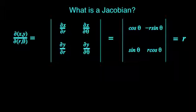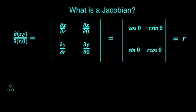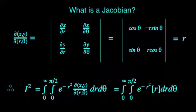When we substitute the Jacobian back into our previous expression for I squared, we finally have an integral in terms of R and theta.